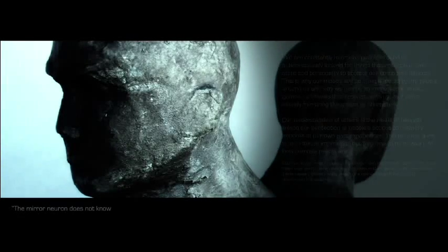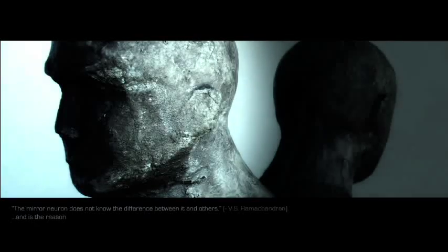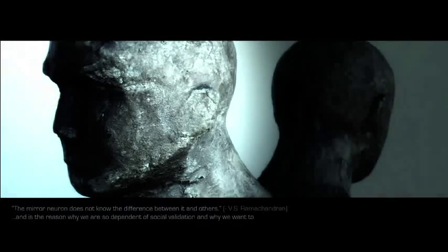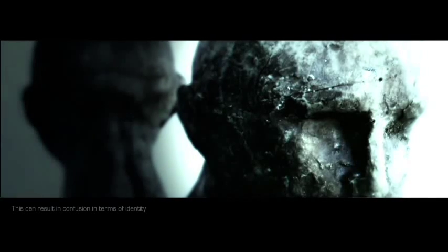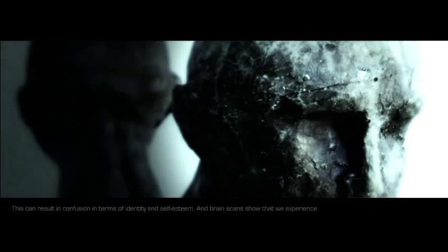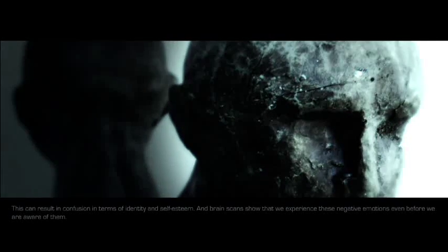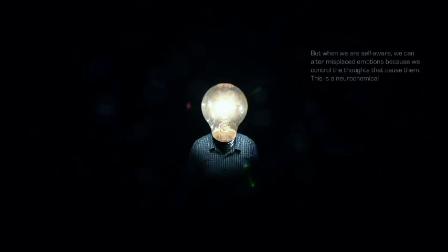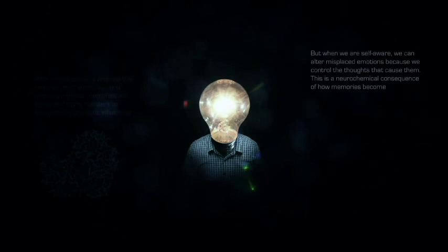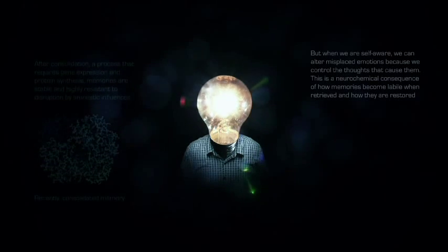The mirror neuron does not know the difference between it and others, and is the reason why we are so dependent on social validation and why we want to fit in. We are in a constant duality between how we see ourselves and how others see us. This can result in confusion in terms of identity and self-esteem, and brain scans show that we experience these negative emotions even before we are aware of them. But when we are self-aware, we can alter misplaced emotions because we control the thoughts that cause them. This is a neurochemical consequence of how memories become labeled and retrieved, and how they are restored through protein synthesis.